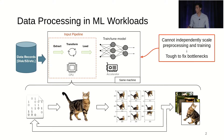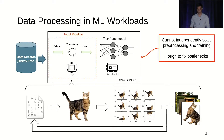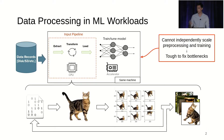This is problematic because you cannot scale the two components independently. Because models train on very fast accelerators whilst input pipelines usually run on quite slow CPUs, oftentimes your input pipeline will be slower than the model, and you cannot really do much about that.